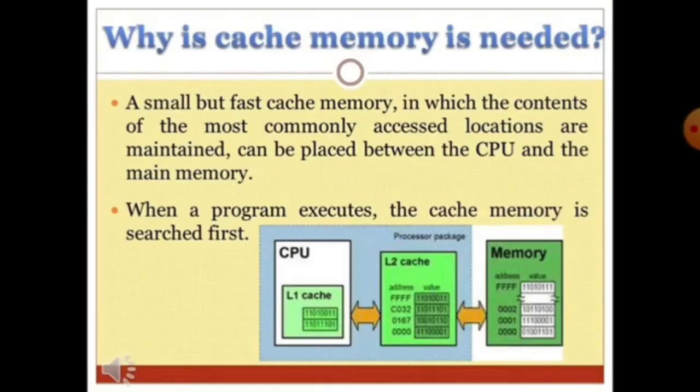Now, why is cache memory needed? What is the reason behind using cache memory? A small but fast cache memory in which the content of the most commonly accessed locations are maintained can be placed between the CPU and the main memory. When a program executes, the cache memory is searched. As you can see here in the block diagram, where the CPU is processing with any instruction and the cache memory is storing those things which are frequently used by the user, whereas the memory part is storing what has been done by the input and output.